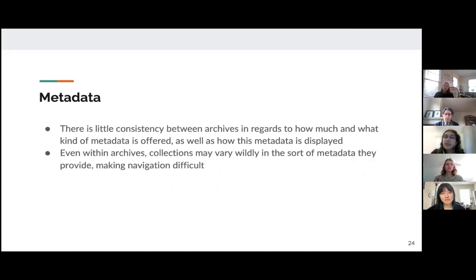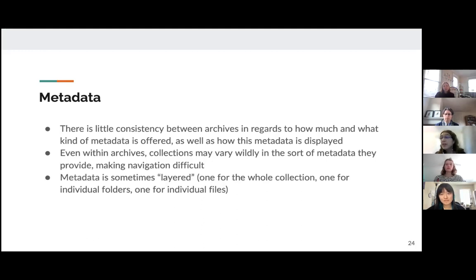We also saw problems in how metadata were recorded. There is little consistency between archives in how much or what kind of metadata is offered, as well as how it's displayed. Even within archives, collections vary wildly in the sort of metadata they provide, which makes navigation difficult because metadata also affects the searching for collections, allowing certain collections to disappear in a targeted search. Metadata is also sometimes layered — there would be one set of metadata for a whole collection, then a different set for individual folders, and sometimes yet another set just for individual files.